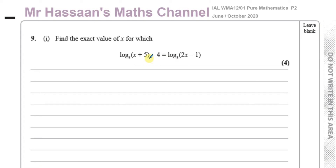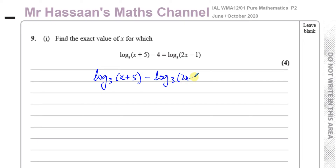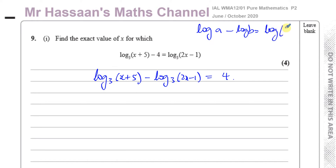There are different methods you can use in dealing with logarithms. What I like to do with a question like this: I check that the bases are the same, which they are — log to the base 3 and log to the base 3. I'll bring the log terms on one side and the constant terms on the other side. So I'll write log to the base 3 of (x + 5), take away the other log term from both sides, leaving minus log to the base 3 of (2x - 1) equals 4. Then I can use the law of logarithms — the division law.